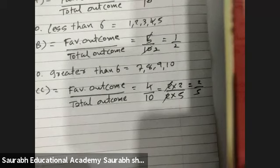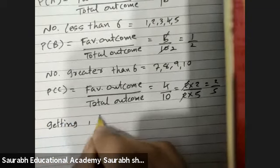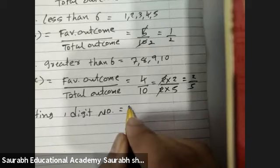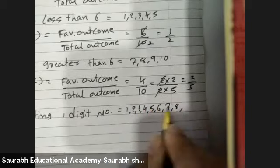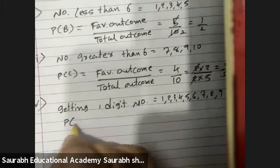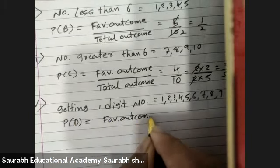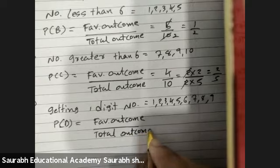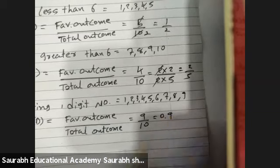Fourth question: getting a one-digit number. All numbers except 10 are one-digit: 1, 2, 3, 4, 5, 6, 7, 8, 9. P of D equals favorable outcome upon total outcome — 9 by 10. We can write 0.9 also, or 9 by 10.